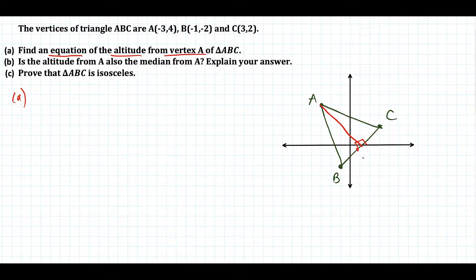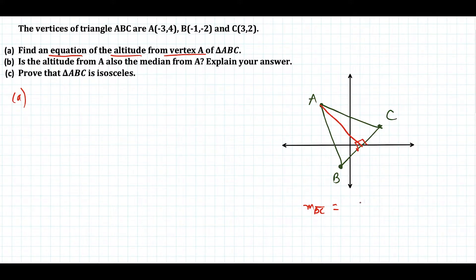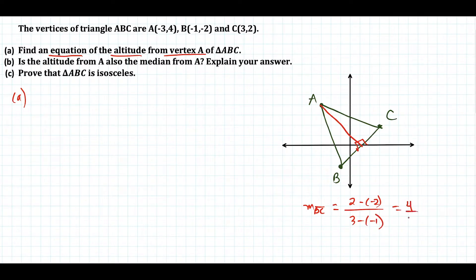What we need to know to write the equation of this line is the slope of the red line. We're going to find the slope of side BC, since those two lines are perpendicular to each other. The slope of BC is the difference of the y-values: 2 minus negative 2, divided by the difference of the x-values: 3 minus negative 1. This gives us 4 divided by 4, which equals 1.